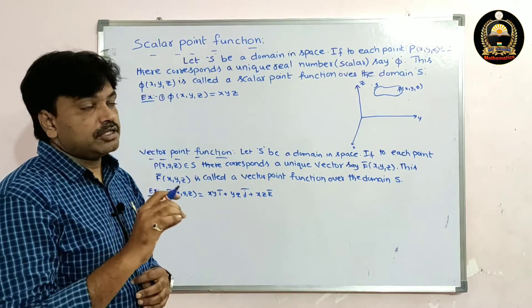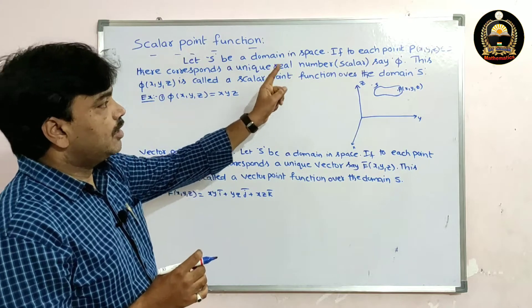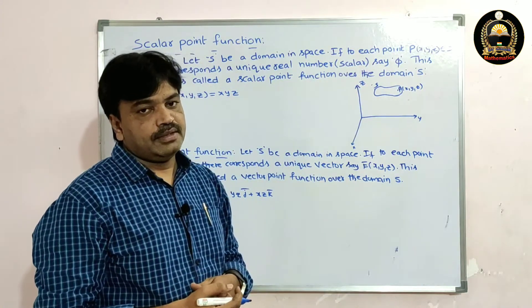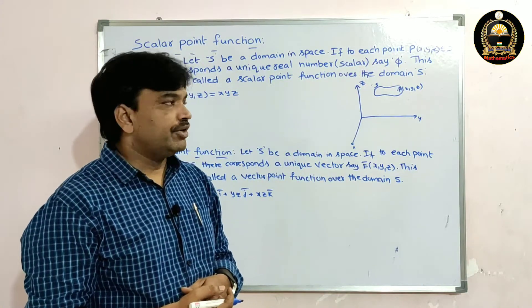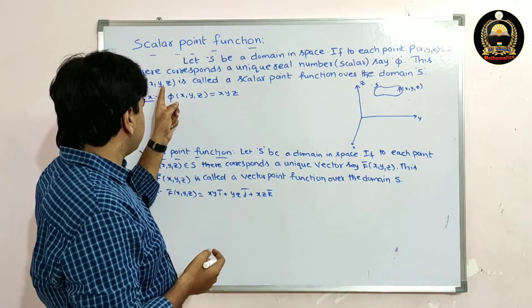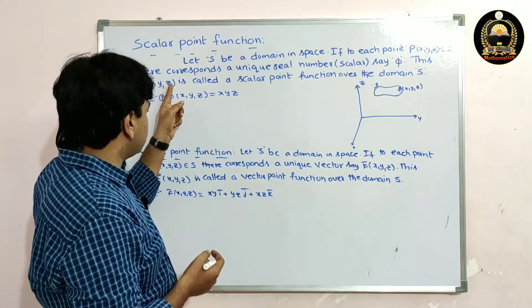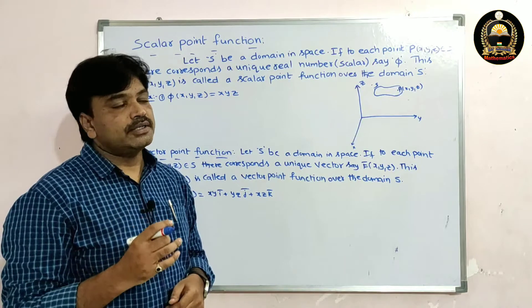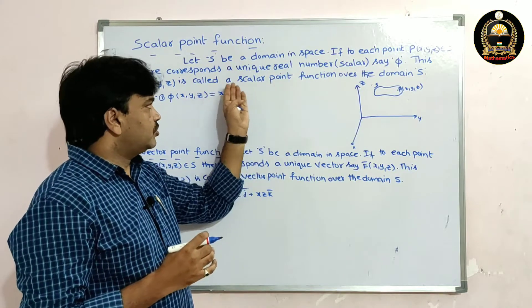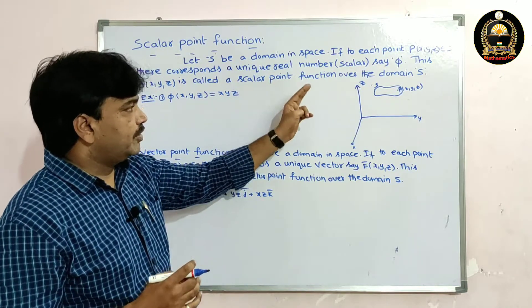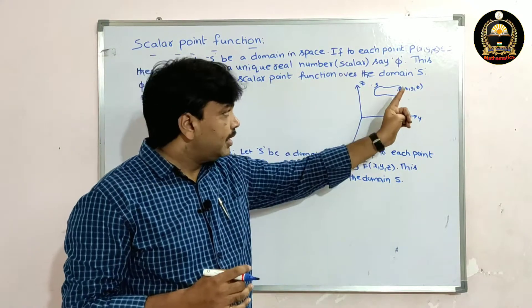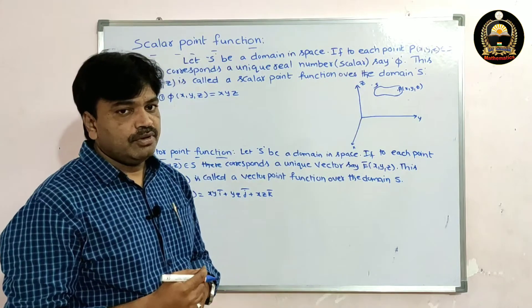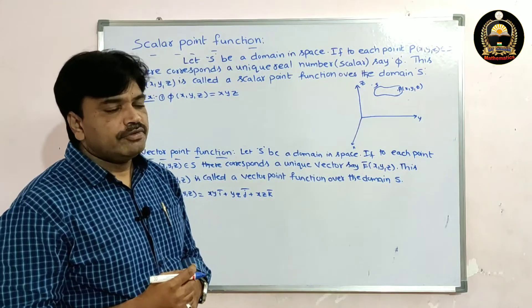...there corresponds a unique real number — say φ — then this φ of x, y, z is called a scalar point function over the domain S.